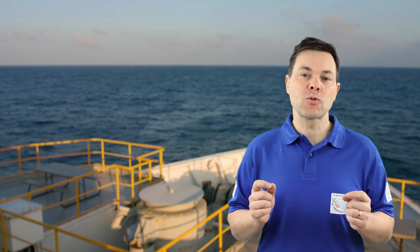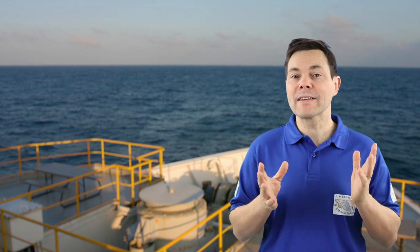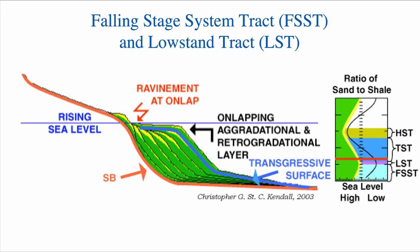We're going to look at each one of these stages step-by-step — how they look in the model and what surface characterizes these different system tracts. Let's start with the falling stage system tract and the lowstand tract.